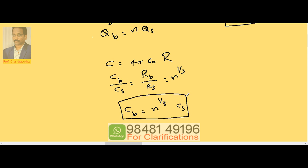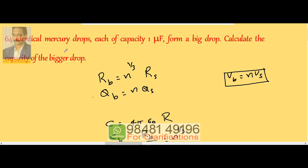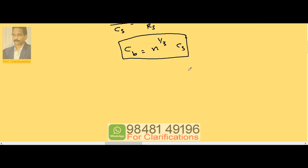Now here n is going to be 64 and cs is 1 microfarad. So 64 to the power of 1/3 into 1. 64 to the power of 1/3 can be taken as 4 cubed to the power of 1/3. That cube and 1/3 gets cancelled, so remaining is 4. So the answer is 4 microfarad, the capacity of the big drop once they combine to form the big drop.